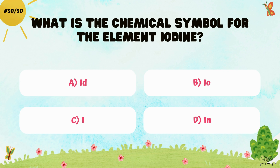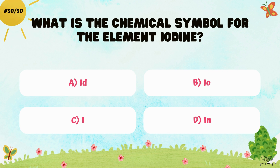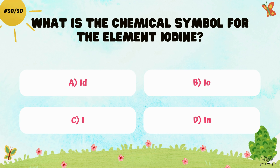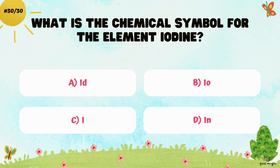What is the chemical symbol for the element iodine? A. Id, B. Io, C. I, and D. In.